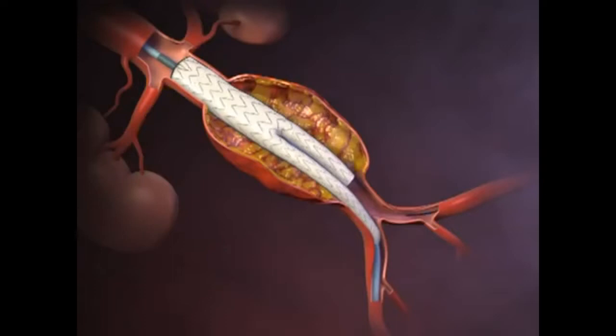A second guide wire is introduced through the contralateral iliac artery into the open lumen of the contralateral limb of the stent graft. The top cap is removed, deploying the suprarenal stent and anchoring the stent graft to the vessel wall.